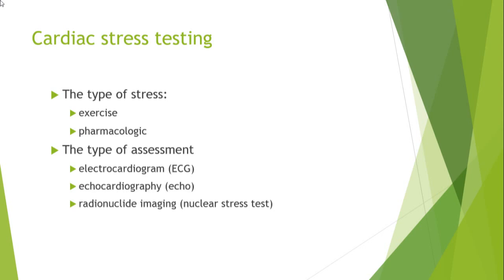The idea is you have a patient who demonstrates classic symptoms of angina and you want to confirm it is really angina by inducing stress on the heart. By putting stress on the heart, you have to see the ischemic changes. This stress on the heart can be given by exercise or by drugs, which is called pharmacologic stress.